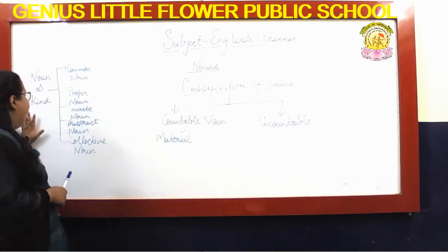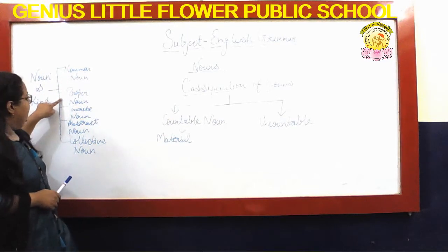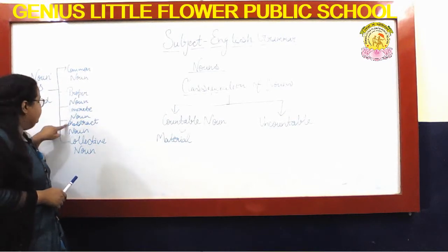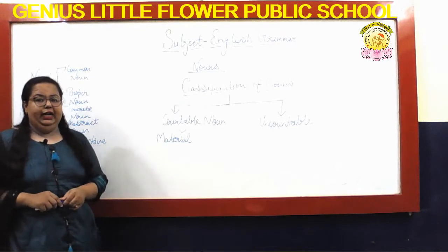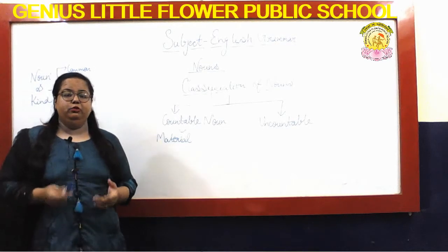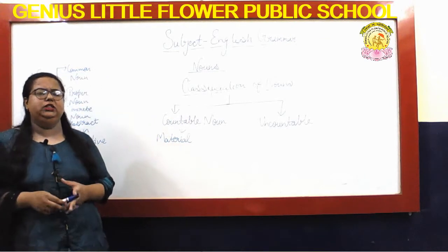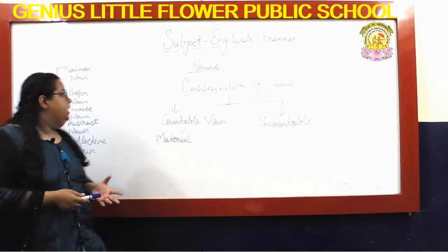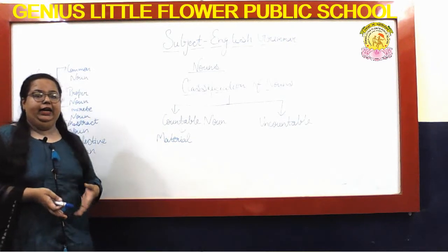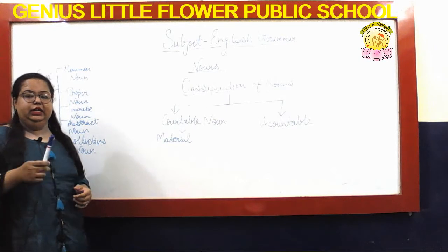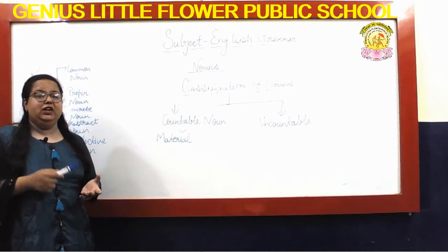We divided nouns into 5 parts: common noun, proper noun, concrete noun, abstract noun, and collective noun. I have already given you some questions related to this, and I hope you have already done them because it is very simple — you just have to find the kinds of noun and underline them in the sentences I gave you.